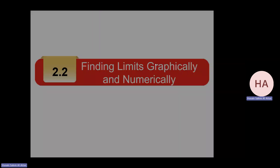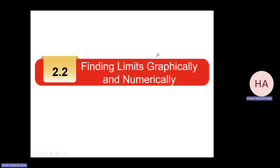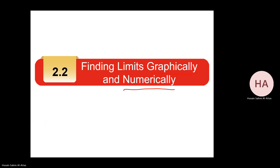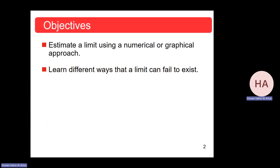We'll now go to section 2.2, which is mainly about finding limits using graphs and using tables through numerical calculation. The objective is to estimate the limit using numerical tables and graphical approach. We'll also check when the limit can fail to exist — cases where the limit will fail to exist.